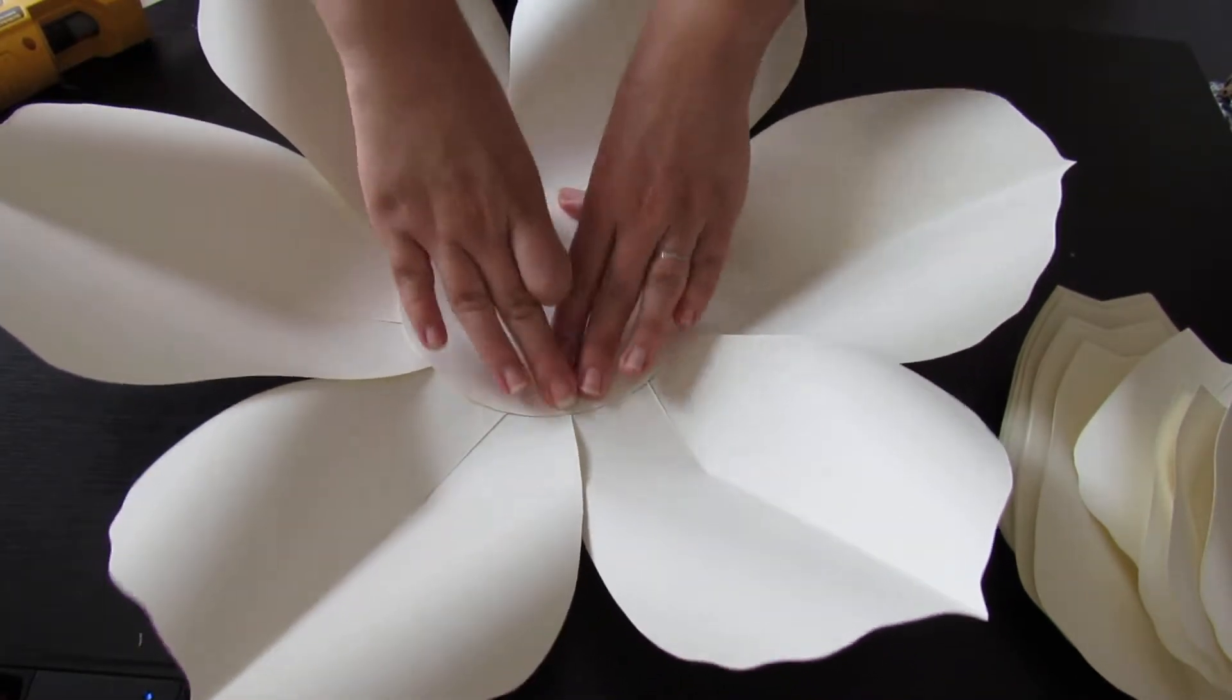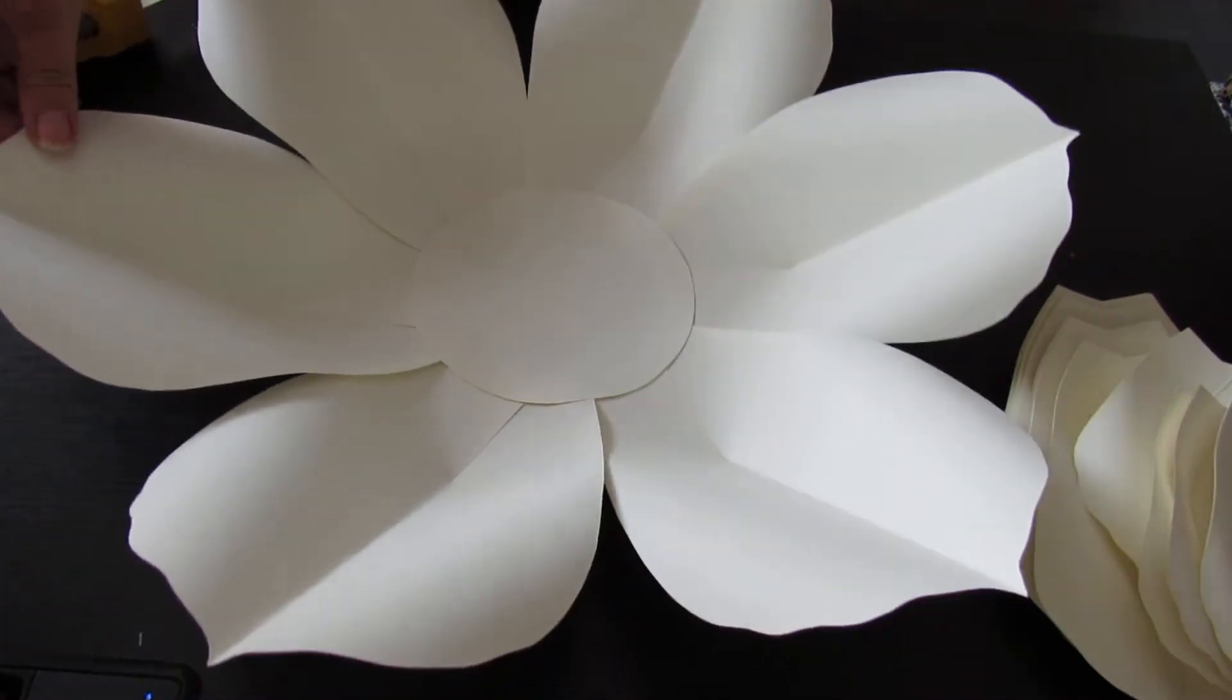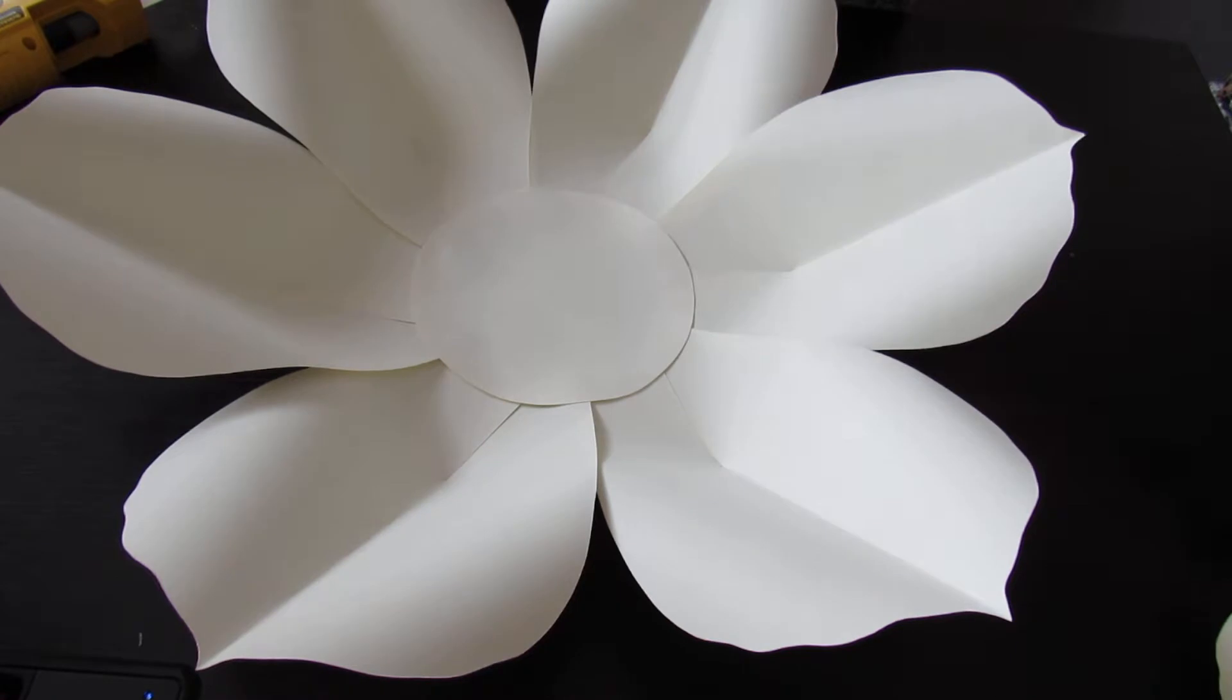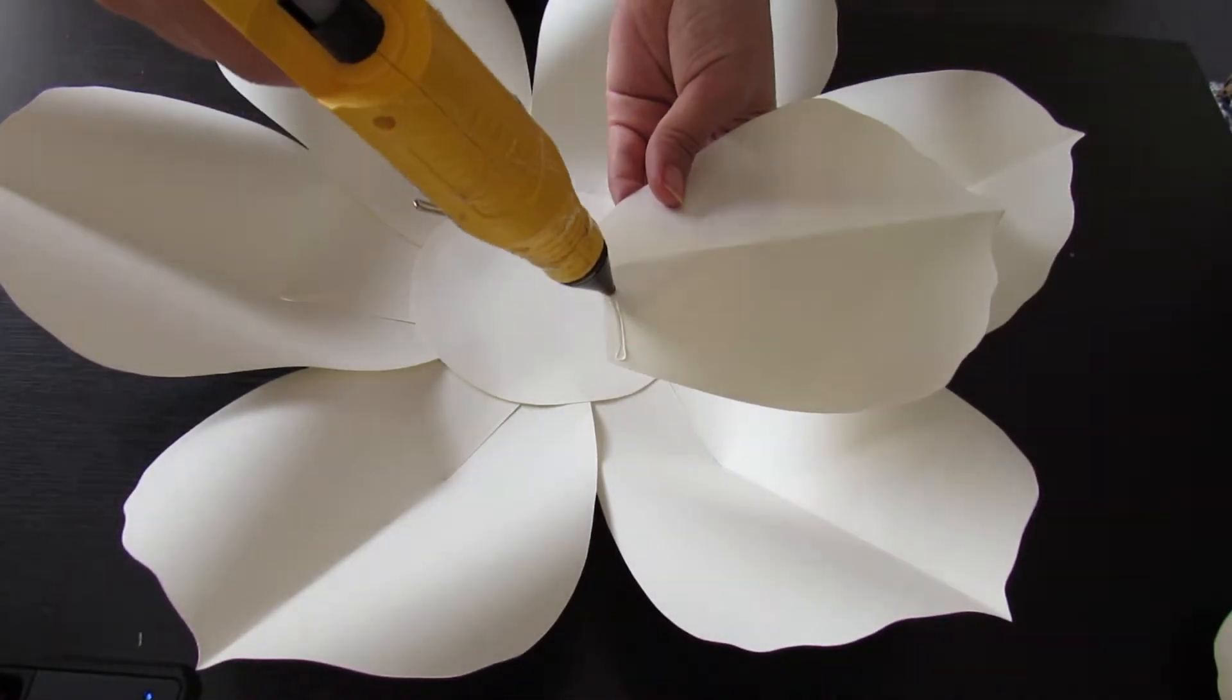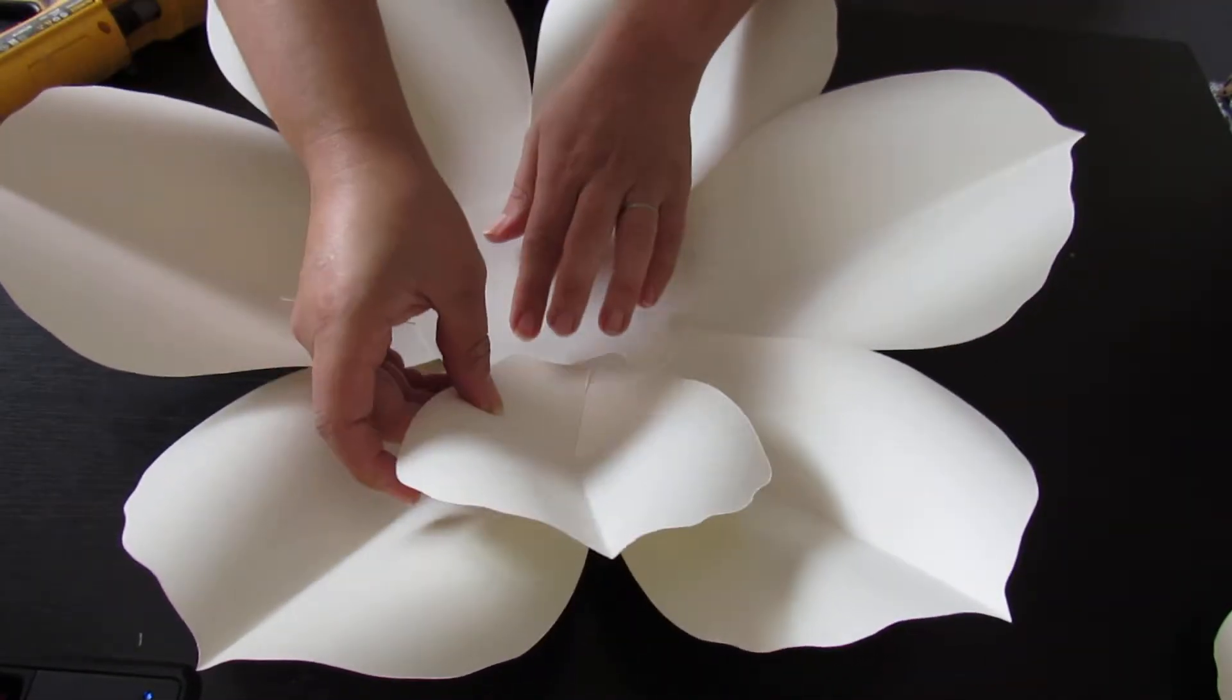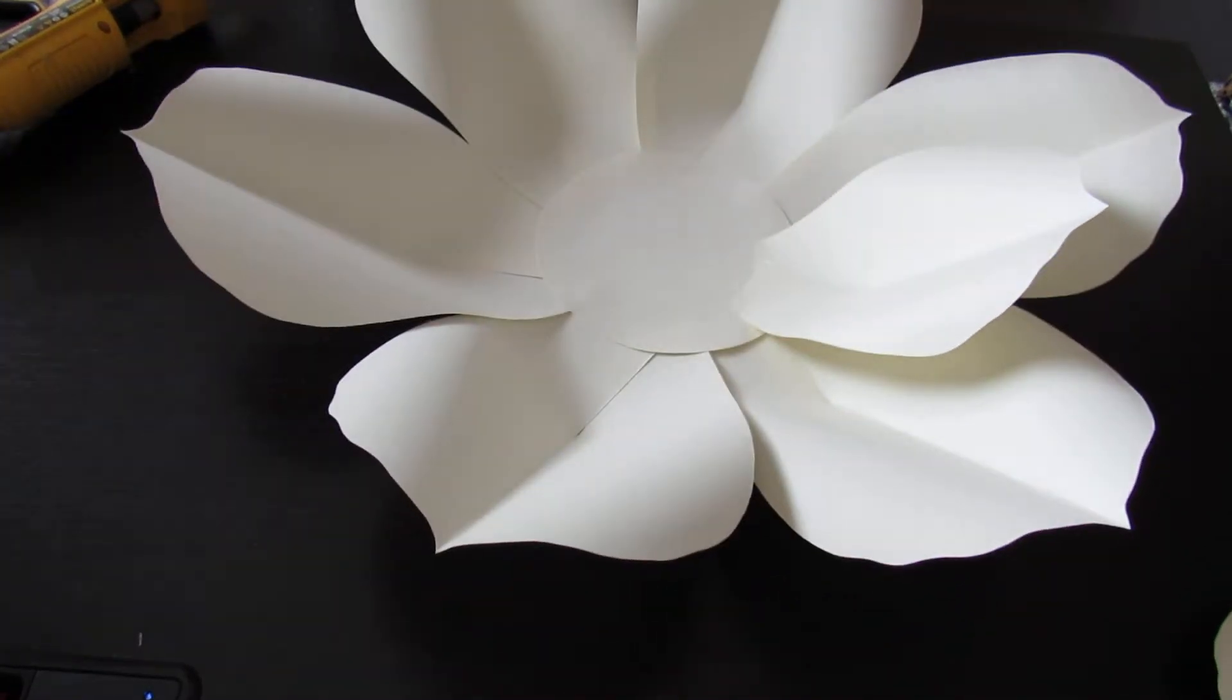Now you're going to get your second largest petals. I like to add my glue across just like this, and now we're going to place them in between. We are going to go all around.